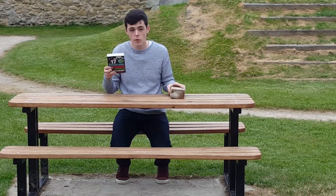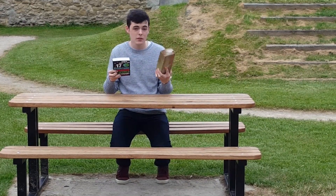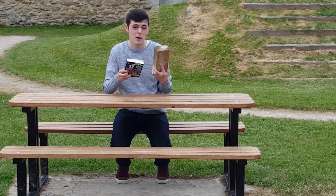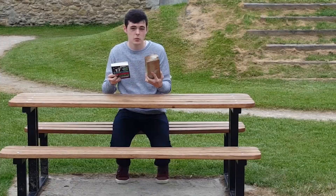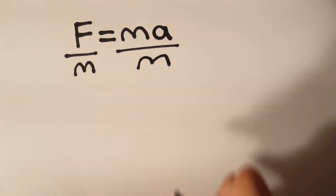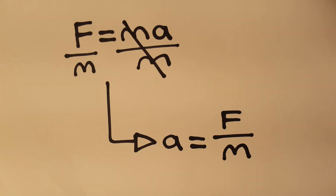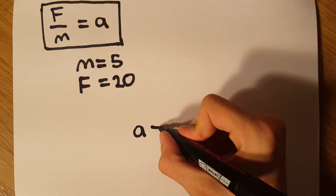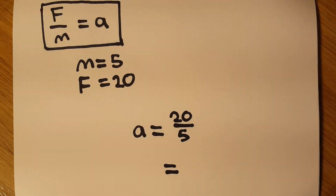For example, if an object has 4 times the mass, it will also have 4 times the amount of force applied to it. This formula can be rearranged to make acceleration the subject: A is equal to F divided by M. For instance, if you had an object with a mass of 5 kilograms being acted on by a force of 20 Newtons, then the acceleration would be 20 divided by 5, which is 4.